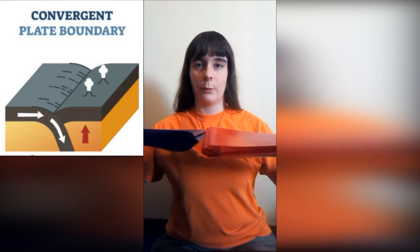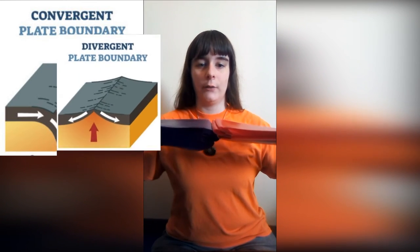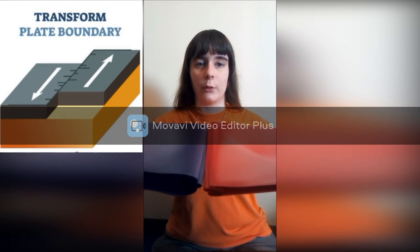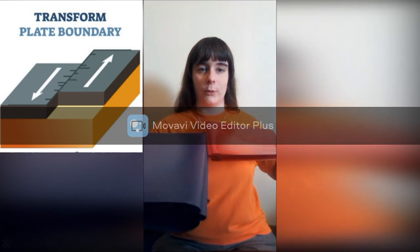Plate tectonics work by magma from the asthenosphere coming up between plates and causing the plates to move. Zones of the plates' edges interactions are responsible for most of the earthquakes and volcanoes that happen on Earth. Three types of zones occur at plate edges: convergent boundaries, where two plates come together and either build mountains or one subducts beneath the other; divergent plate boundaries, where two plates pull apart and new rock forms at their edges; and transform, where two plates move in parallel to each other.